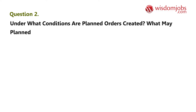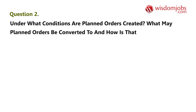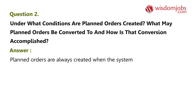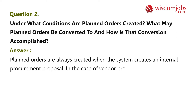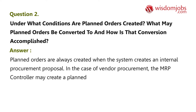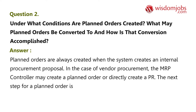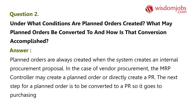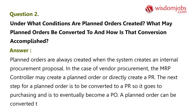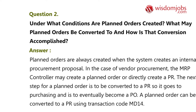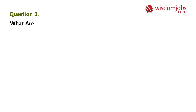Question 2: Under what conditions are planned orders created? What may planned orders be converted to, and how is that conversion accomplished? Answer: Planned orders are always created when the system creates an internal procurement proposal. In the case of vendor procurement, the MRP controller may create a planned order or directly create a PR. The next step for a planned order is to be converted to a PR, so it goes to purchasing and eventually becomes a PO. A planned order can be converted to a PR using transaction code MD14.